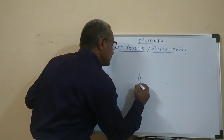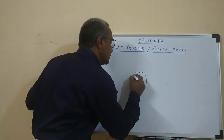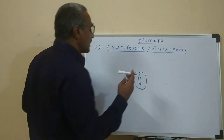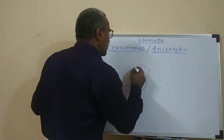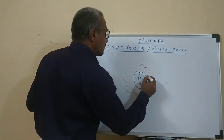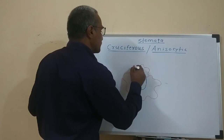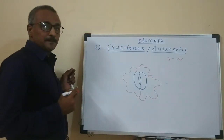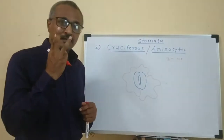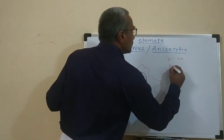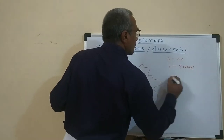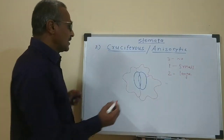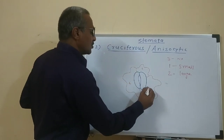In the anisocytic type of stomata, the guard cells are kidney-shaped and come in pairs. Along with the guard cells, the subsidiary cells are arranged — always three in number. One subsidiary cell is always small, and the other two are always large or big.